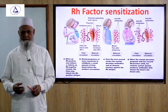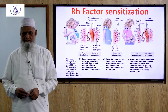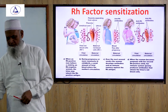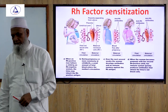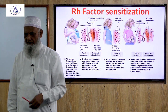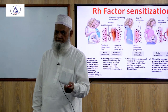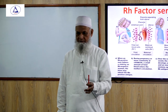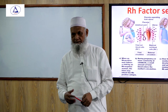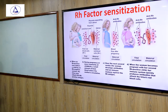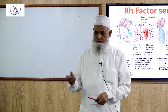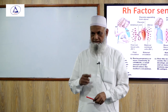Destruction of fetal red blood cells occurs via intravascular hemolysis, which is complement-mediated lysis, and extravascular hemolysis via erythrophagocytosis. The liver and spleen contain professional phagocytes — mononuclear phagocytic cells — that carry out this destruction.